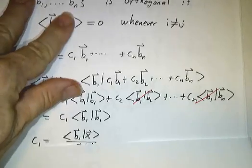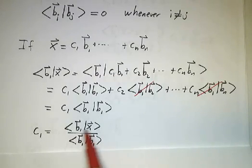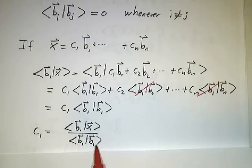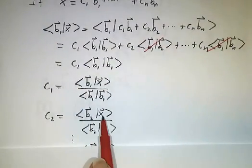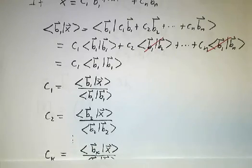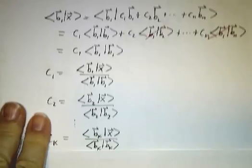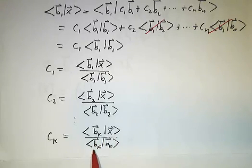That means c1 must be the inner product of b1 with x, divided by the inner product of b1 with itself. Likewise, c2 is the inner product of b2 with x divided by the inner product of b2 with itself. In general, each coefficient ck is given by the inner product of bk with your vector, divided by the inner product of bk with itself.